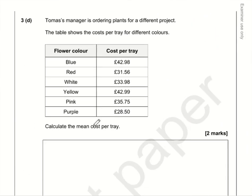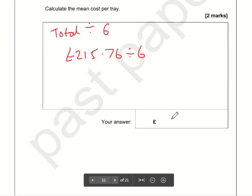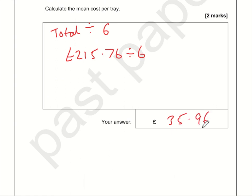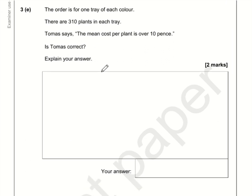For this question we want to calculate the mean cost per tray — that's the total divided by the number of trays, which is six. The total is £42.98 plus £31.56 plus £33.98 plus £42.99 plus £35.75 plus £28.50, which comes to £215.76. So 215.76 divided by 6 gives a mean of £35.96.